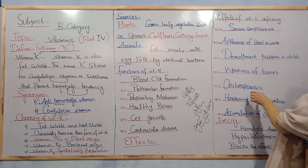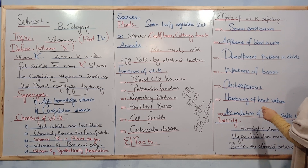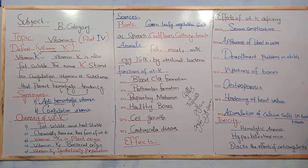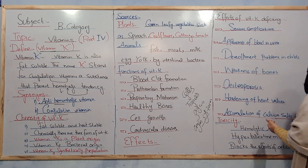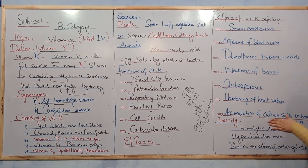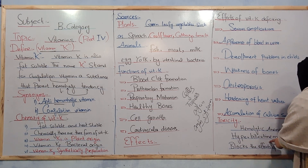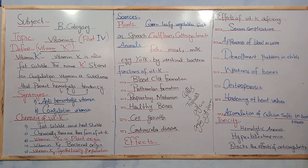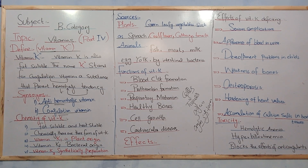Osteoporosis can result from vitamin K deficiency, causing weak and painful bones. Hardening of the heart walls can occur, along with accumulation of calcium in body tissues. Regarding toxicity, excess vitamin K can cause hemolytic anemia, hyperbilirubinemia, and can block the effects of anticoagulants, affecting newborns particularly.